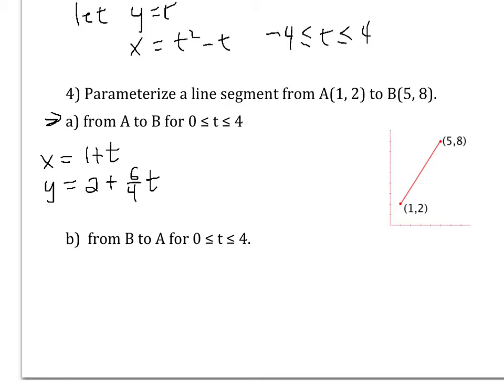This one's kind of tricky, actually. X isn't too bad. When t is 0, x is 1. When t is 4, x is 5. Good. And when t is 0, y is 2. But notice, when t equals 4, you want y to be 8. So when you plug in 4 for t, you want the total sum to be 8. So you'd have to have a 6 fourths or 3 halves there to get 8 when t equals 4. Kind of sneaky, huh?